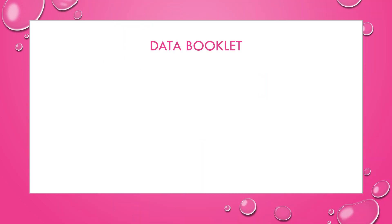I want to just take a moment and point out all of the resources that are available in the data booklet that relate to periodicity, because there's quite a lot. Section 7 is the general periodic table — the normal one with the atomic number and the average atomic mass. Then in section 8, you have values on melting point and boiling point at standard pressure.